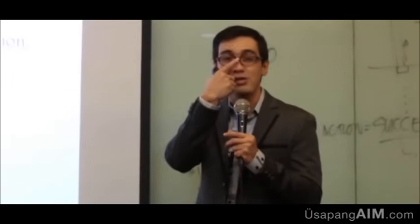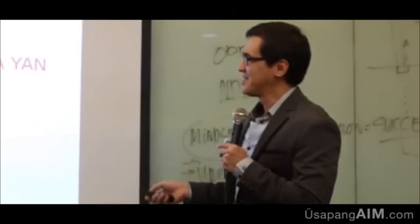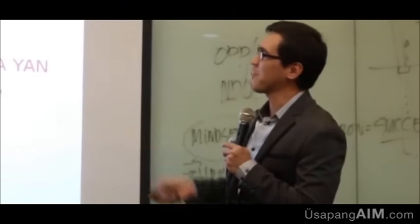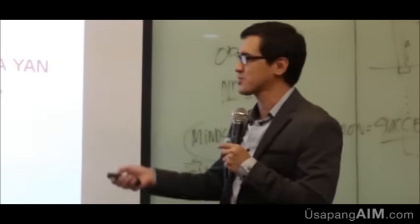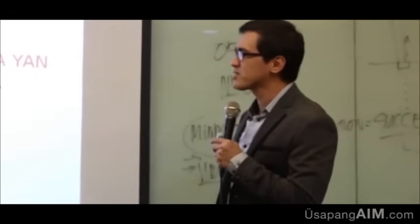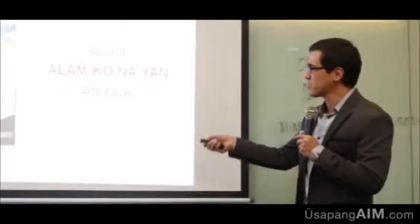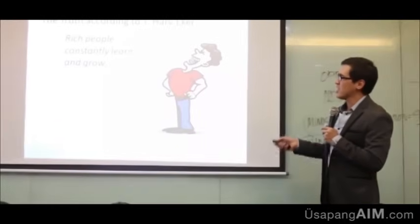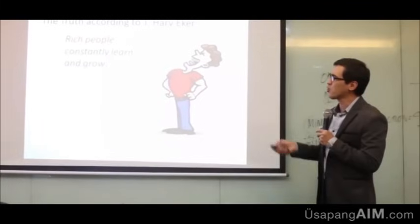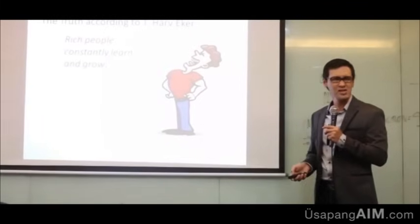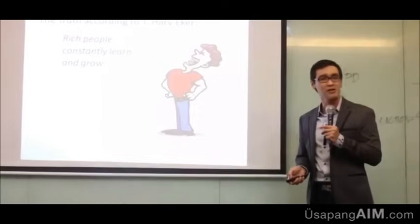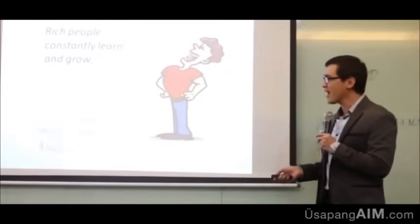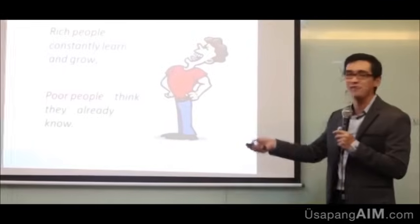Avoid the 'alam ko na yan' attitude. T. Harv Eckert from Secrets of the Millionaire Mind, New York Times number one bestseller says: Rich people constantly learn and grow. Sometimes successful and rich people still have good learning attitudes. But poor people think they already know.